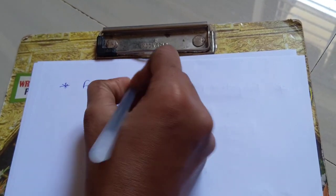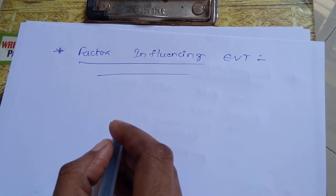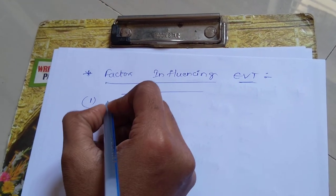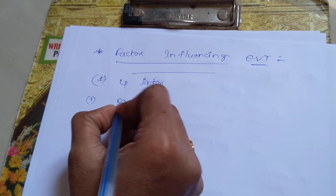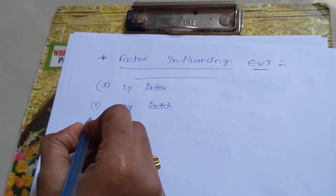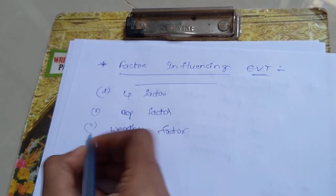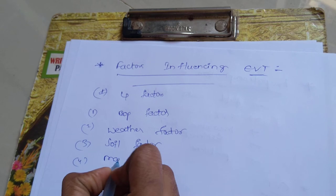The next topic is about factors influencing evapotranspiration. Evapotranspiration is generally categorized into four factors: the first is crop factor, the second is weather factor, the third is soil factor, and the fourth is management factor.